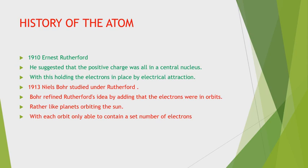This model was modified by Niels Bohr in 1913. Bohr refined Rutherford's idea by adding that electrons were in orbits, rather like planets orbiting the sun, with each orbit only able to contain a set number of electrons — given by the formula 2N squared.